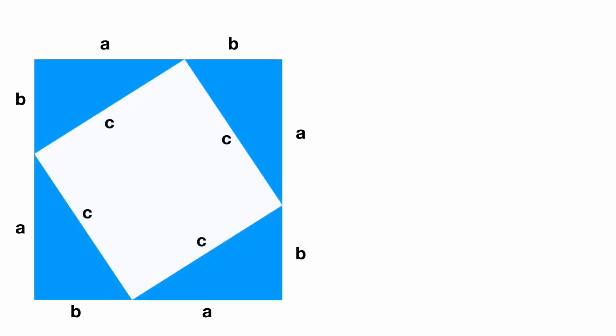Now let's try and find the areas of all shapes in the configuration including the four triangles. The area of all four triangles is 4 times 1 half ab which simplifies to 2ab.